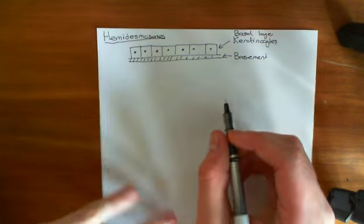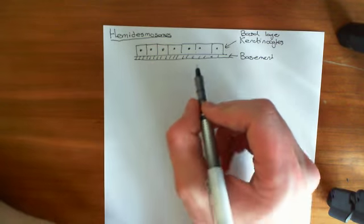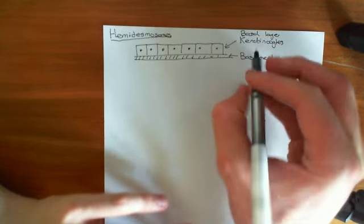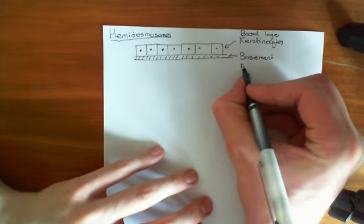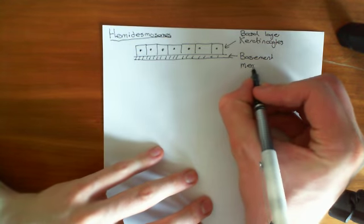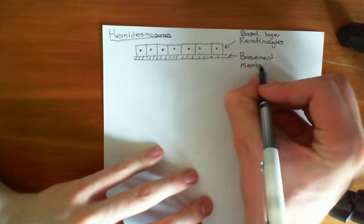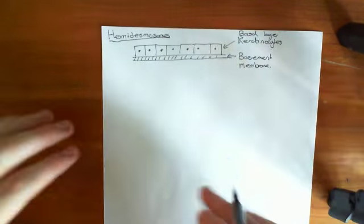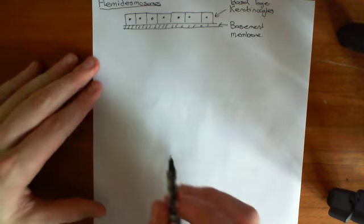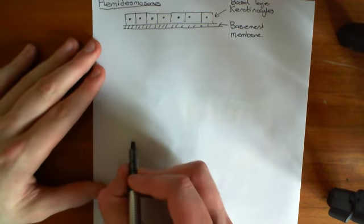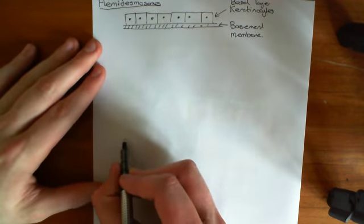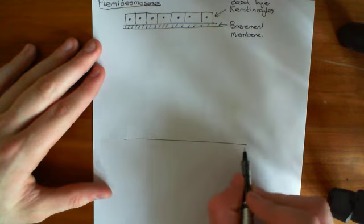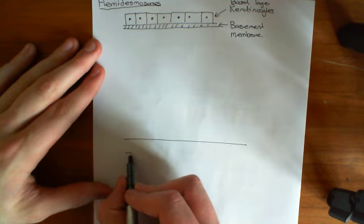Firstly, let's recap the structure of the basement membrane, because the hemidesmosomes are going to interact a lot with the basement membrane. The basement membrane, as we saw in the previous video, consists of two main layers. It consists of a basal layer.